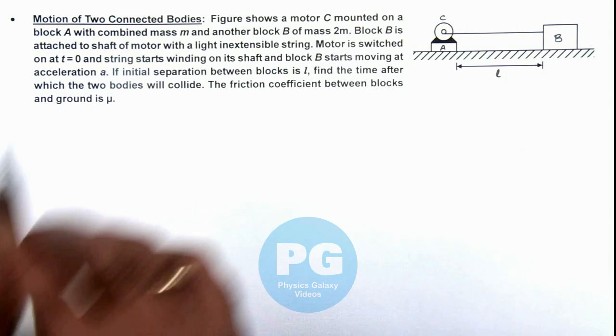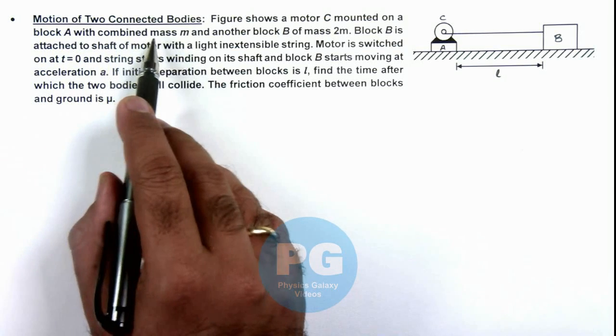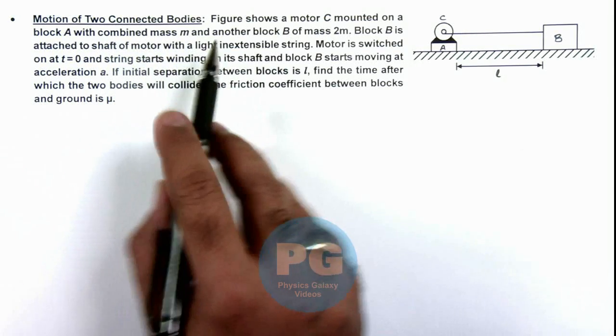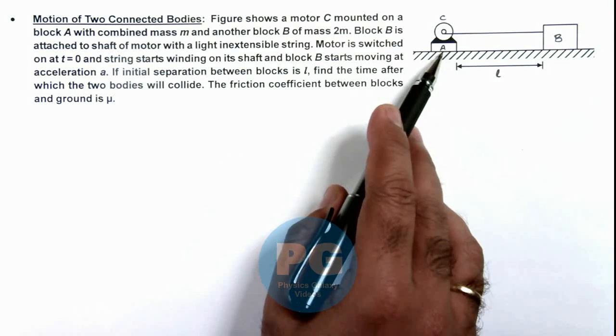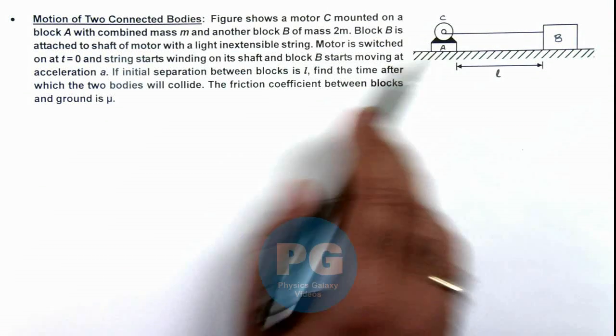This illustration is about motion of two connected bodies. Here, the figure shows a motor C mounted on a block A with a combined mass m. This system is having a mass m.